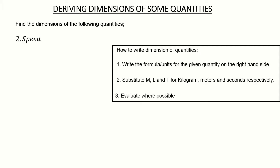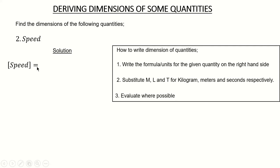Now, what about speed? What is the dimension for speed? First, I write speed in square brackets. Step one: write the formula or units. I prefer using units because it makes things easier. The unit for speed is meters per second. If you want to be very good in dimension, you must know the units of different quantities.